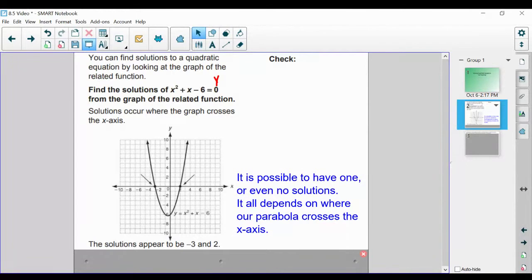Looking at this parabola, the solutions appear to be -3 and 2. Let's check to make sure those are indeed the solutions. As we check, we're going to substitute in the value of x separately as -3 and positive 2.